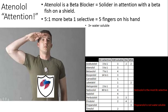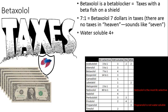Next we have betaxolol, which kind of looks like 'beta tax.' So this is Texas with the beta fish shield there. This is seven-to-one more beta-1 selective than beta-2. You think, 'there's no taxes in heaven,' and heaven kind of sounds like seven — so that might help you remember that this is a seven-to-one more beta-1 selective than beta-2.